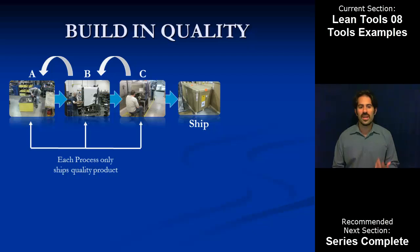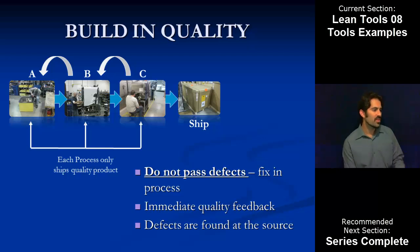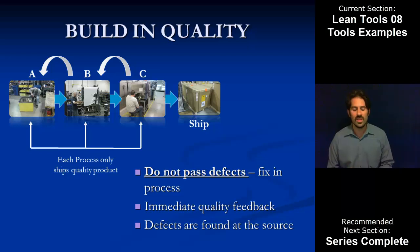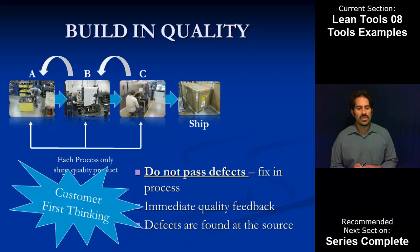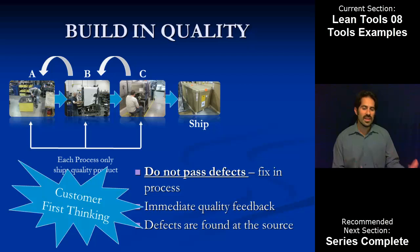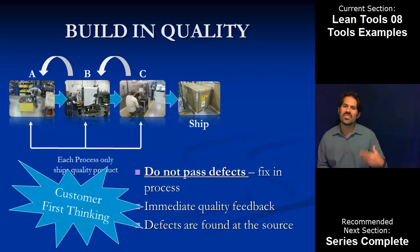In terms of tools to help build in quality, our overall goals are that we don't want to pass defects — we want to catch them, find them, see them, and fix them in the process. The reason that's valuable is we get immediate quality feedback and won't build 30 units with defects before someone downstream catches them. Those defects are found at the source, so we don't have to rework everything. This is really a representation of customer-first thinking — providing our internal customers, the next process down, good product they expect and don't have to rework themselves.